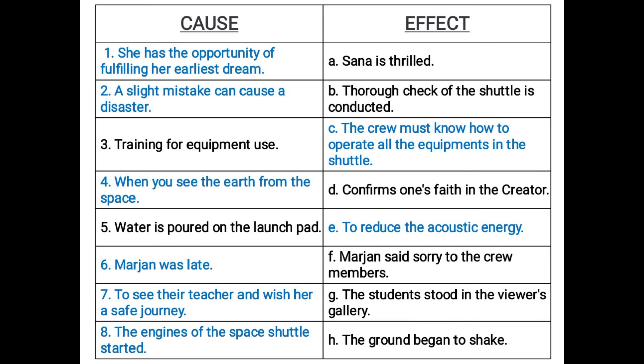Number two: thorough check of the shuttle is conducted. Why is a thorough check conducted? Because a slight mistake can cause a disaster — a small mistake can cause a big disaster in space. So, we have to make sure before the launch that everything is done perfectly.